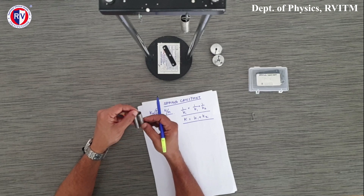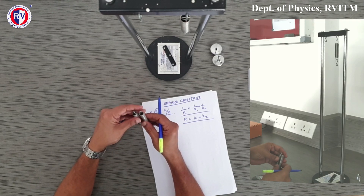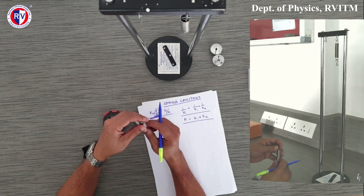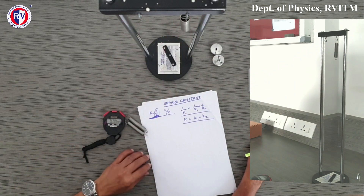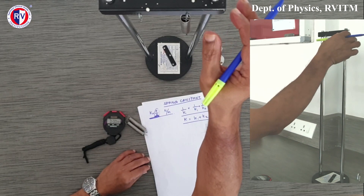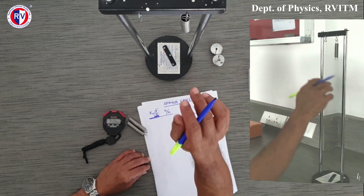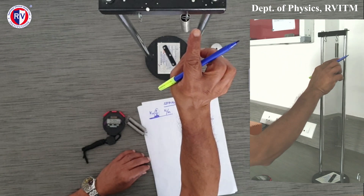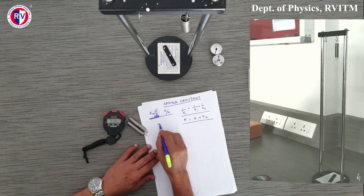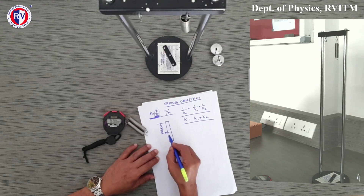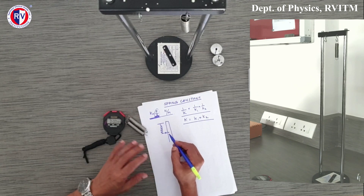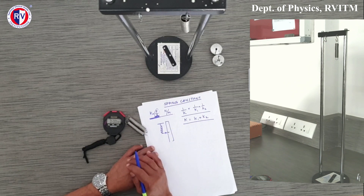In our experiment you are given two springs, and we can conduct the experiment in two ways. One is called the static method. In the static method, you connect the spring and suspend it from a fixed support. Here we fix a meter scale and at the end of the spring a reference point is fixed. Whatever reading it shows will be taken as the reading corresponding to the spring when it is not extended — even with a dead load we can take this reading.